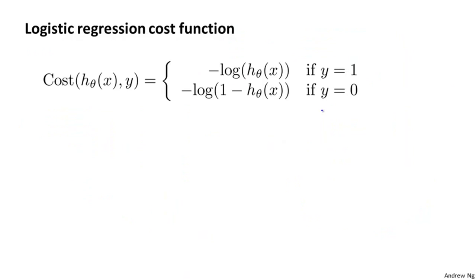So we want to come up with a different cost function that is convex, so we can apply gradient descent and be guaranteed to find the global minimum. Here's the cost function we're going to use for logistic regression. The cost the algorithm pays, if it outputs h(x) and the actual label is y, will be: minus log h(x) if y equals 1, and minus log(1 minus h(x)) if y equals 0.